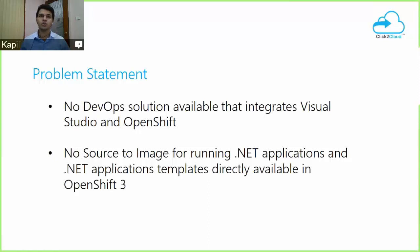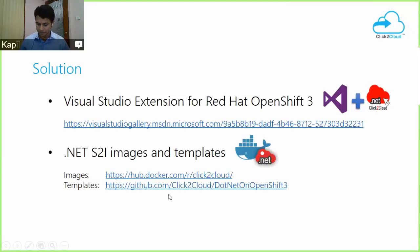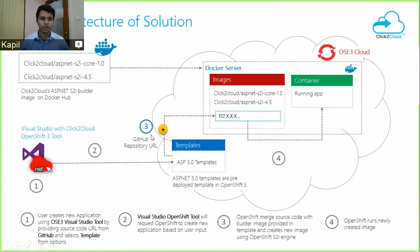Another problem is there are no source-to-image images and .NET application templates directly available in OpenShift 3. If a developer wants to host a .NET-based application on OpenShift 3, they have to design a Dockerfile based on their application's needs and deploy using the OpenShift 3 command-line tool. To fix the first problem, we worked with Visual Studio developers and created a Visual Studio extension for Red Hat OpenShift 3. To enable .NET support on OpenShift 3, we developed .NET source-to-image images and templates, downloadable from Docker Hub and GitHub.